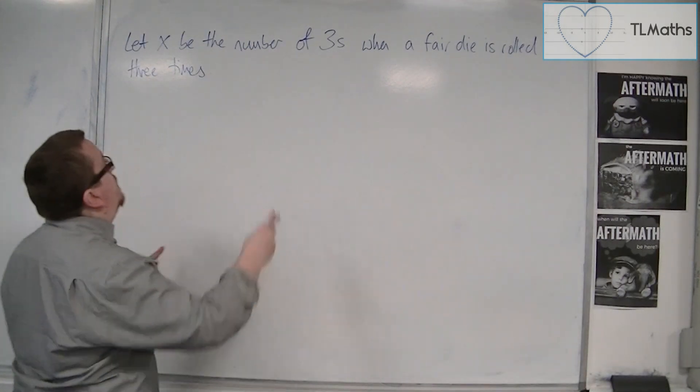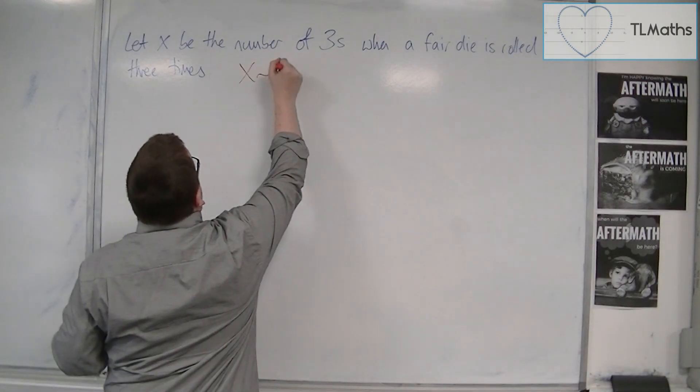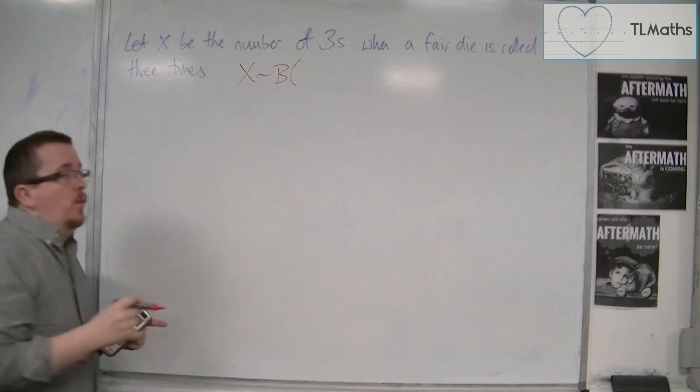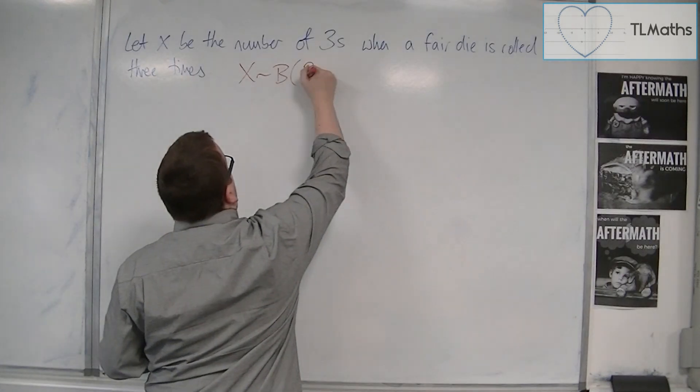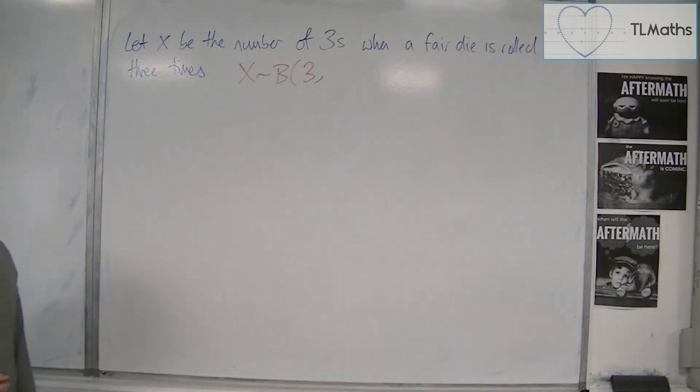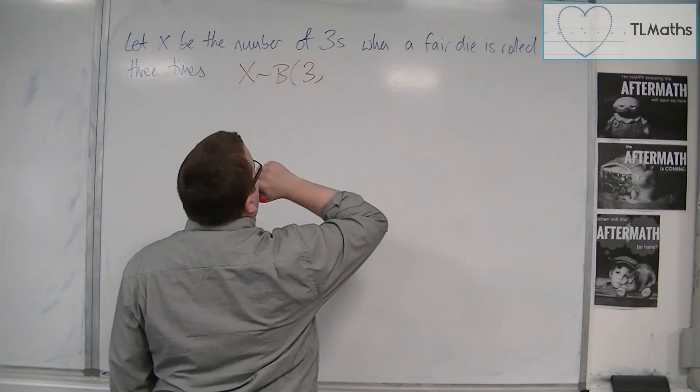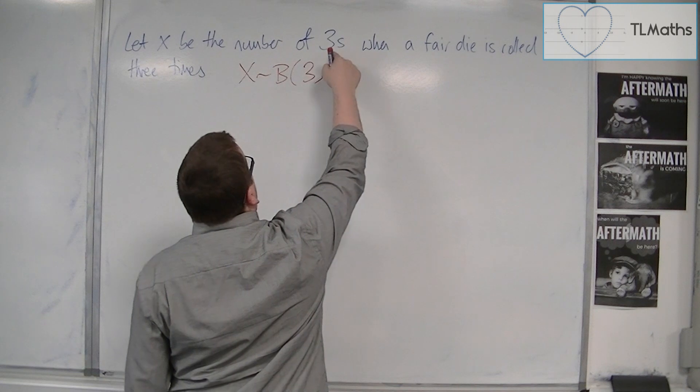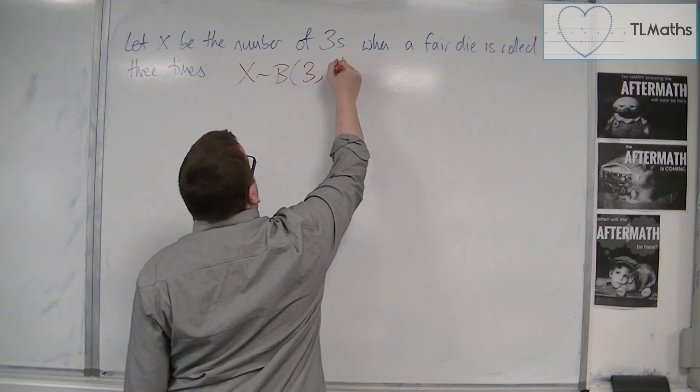So let x be the number of 3s when a fair die is rolled 3 times. So what we have is x being binomially distributed with an n of 3, because there are 3 rolls of the die. And the probability of success, the probability of getting a 3, is 1 sixth.